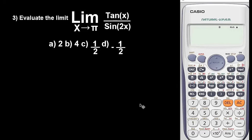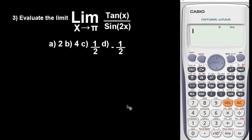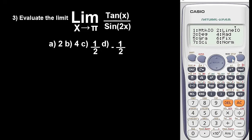As usual, first clear the calculator to avoid unnecessary errors, since we are going to store a new value. Press Shift 9, follow the instruction, press 3, then press equals repeatedly. Before we add 0.001 to π, we must put the calculator in radian mode because of the trigonometric functions. To change to radian mode, press Shift, then Mode, then press 4.